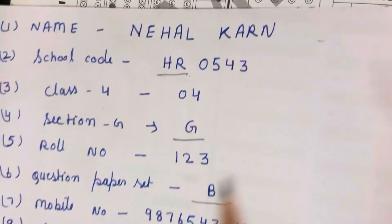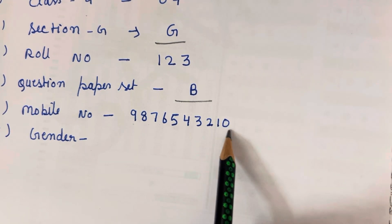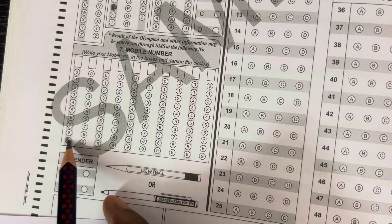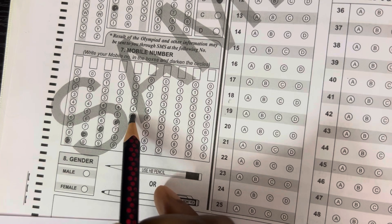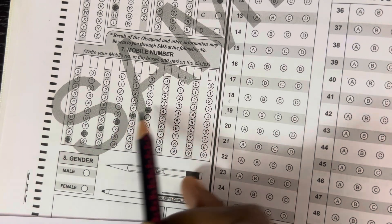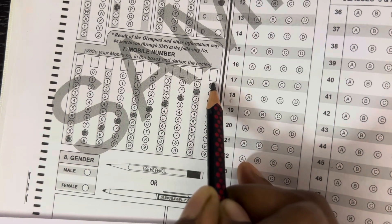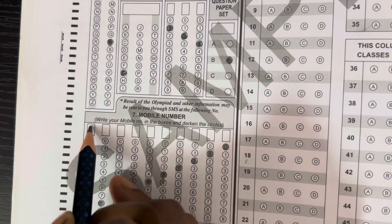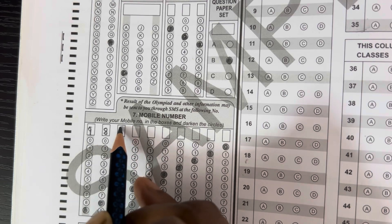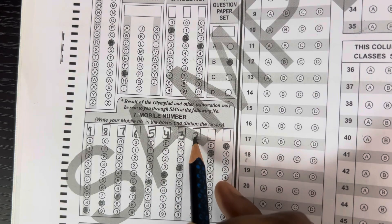The seventh point is the mobile number — your parent's mobile number. Suppose it is 9876543210. Then you will fill 9, 8, 7, 6, 5, 4, 3, 2, 1, 0 in the bubbles. You also have to write the number in the corresponding boxes.